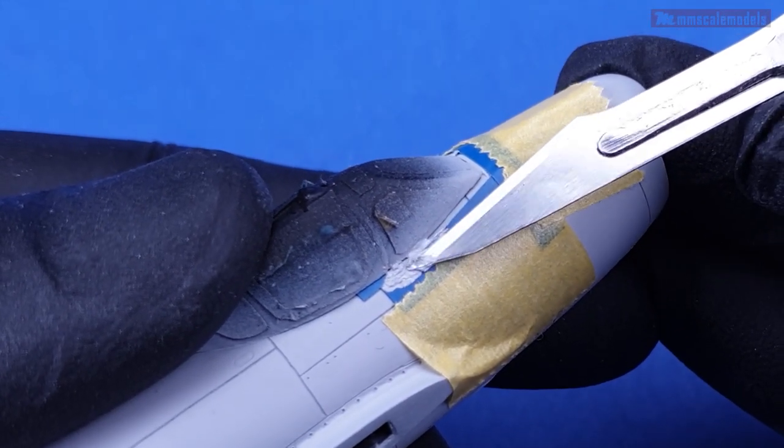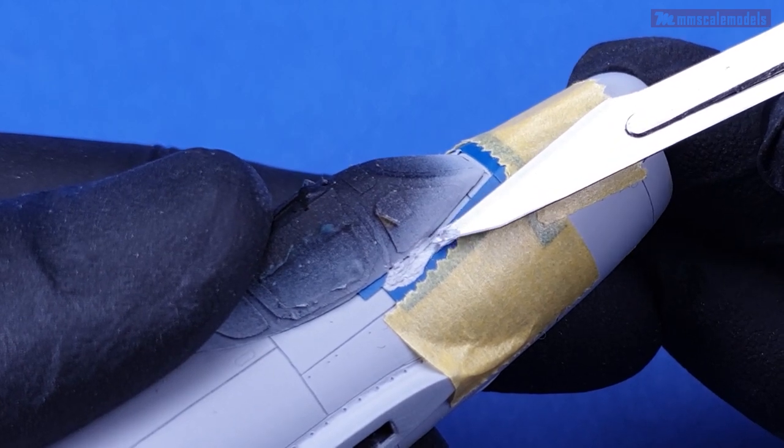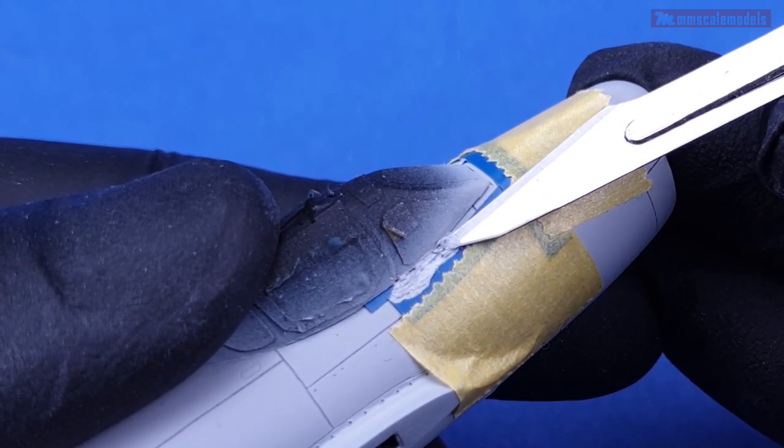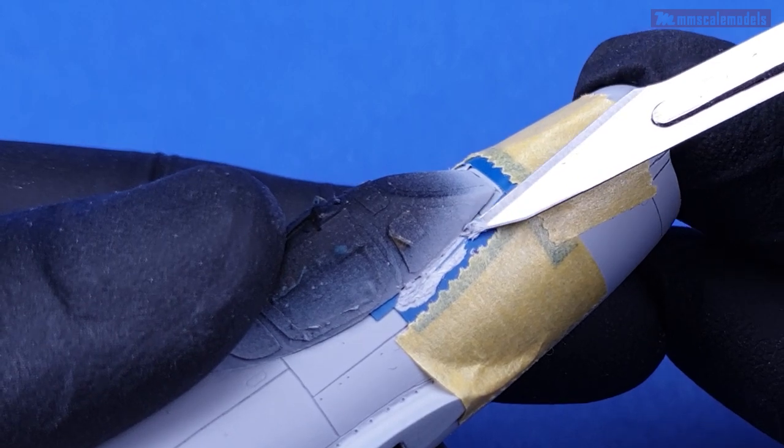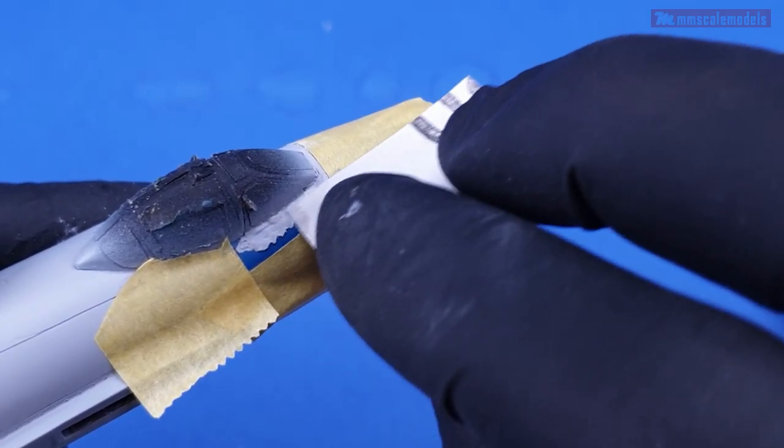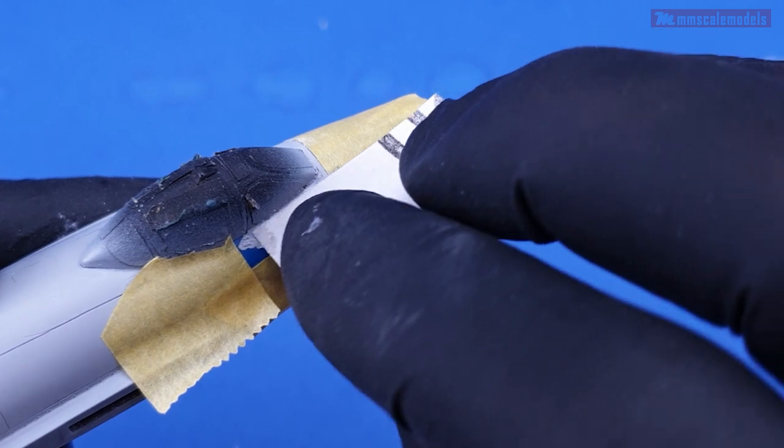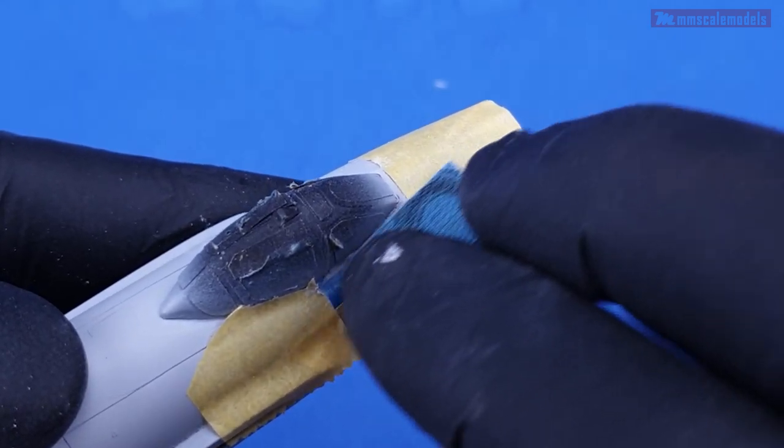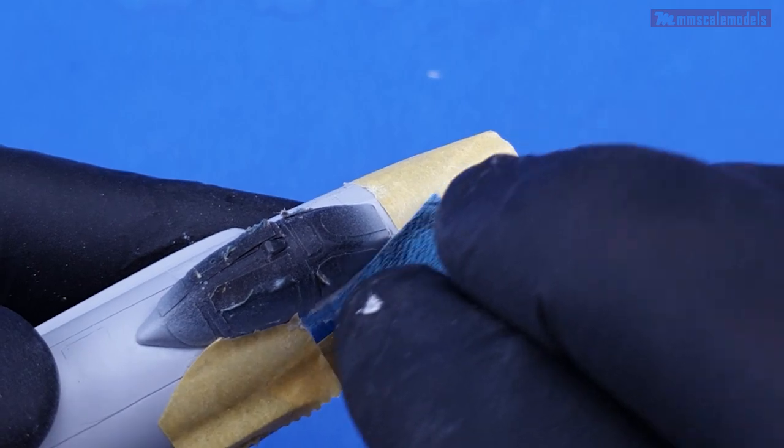I did not want to spread the filler on the windshield so I was extra careful at application. Then with some paper I sanded down the filler until all the tape was revealed. At this point it is safe to remove the tape and enjoy the results.